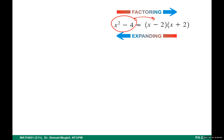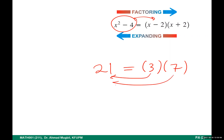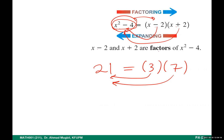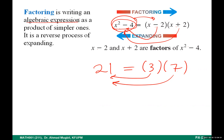Going from left to right, when you have the expanded expression and write it as a product — that is factoring. Like 21: 21 is three times seven, so we factored it. Usually the factors are simpler than the original expression. Here the factors are simpler than the polynomial we started with — we had a degree-two polynomial and now each factor is linear. In general, factoring is writing an algebraic expression as a product of simpler algebraic expressions. It is the reverse process of expanding.